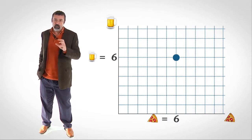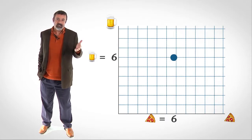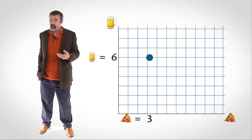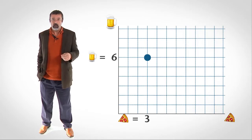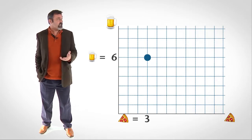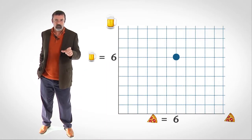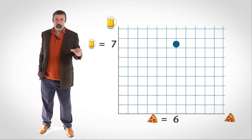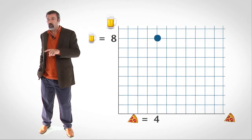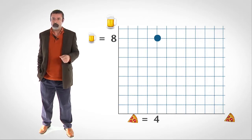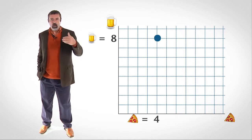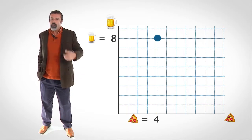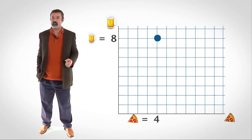If we hold the amount of beer constant at six and decrease the slices of pizza to three, you're definitely worse off. Six beers and three slices of pizza give you less utility than six beers and six slices of pizza. Now for the tricky part: starting from six beers and six slices of pizza, suppose we give you two more beers and take away two slices of pizza, leaving you with eight beers and four slices. Whether or not you're better off depends on your preferences for beer and pizza.